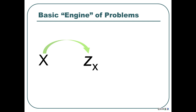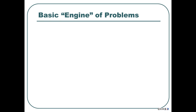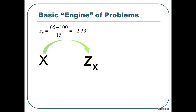We know the distribution is normal with a mean of 100 and a standard deviation of 15 — that's all we need. We're going to have a normal distribution with a cutoff line at 65, and we want to find the area from there to the left — because 'lower' just means to the left. Using the formula: 65 minus 100, divided by 15, equals negative 2.33. It's a negative z-score. In the table we look in the negative z-score section, row negative 2.3, column 0.03.